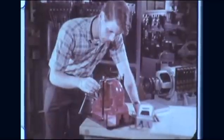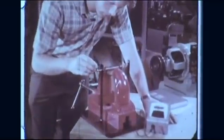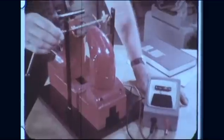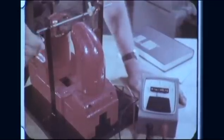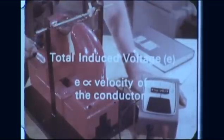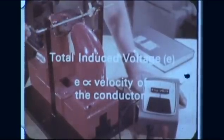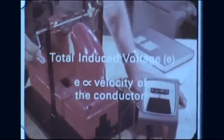Another factor which determines the total induced voltage is the velocity of the coil in the magnetic field. The faster the rotation, the faster the coil cuts through the lines of force, and the greater the induced voltage. Thus, the induced voltage is directly proportional to the velocity at which the conductor cuts through the lines of magnetic force.